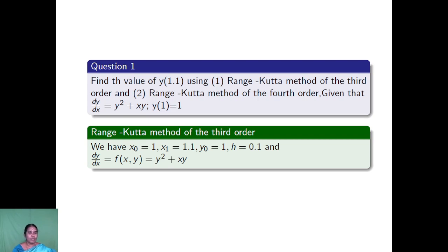First question: find the value of y(1.1) using, first subdivision, Runge-Kutta method of third order, and second subdivision, Runge-Kutta method of fourth order. It is given that dy by dx is equal to y squared plus xy, with the initial value y(1) equal to 1. The question has two subdivisions: first up to third order, then the second subdivision is fourth order. The given information: f(x, y) equals y squared plus xy, x0 equals 1, x1 equals 1.1, y0 equals 1, and h equals 0.1.